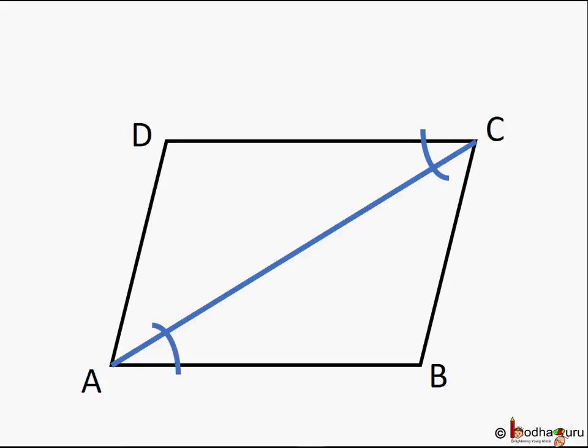So triangle ABC and triangle ACD are congruent following SAS rule. Now we can say angle BCA is equal to angle CAD, the corresponding angles of congruent triangles, but they are alternate angles.